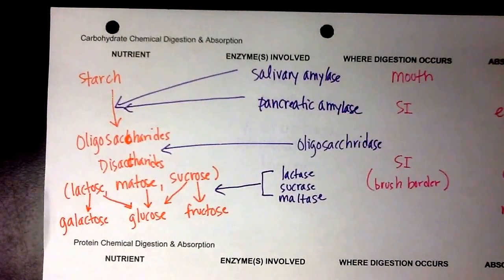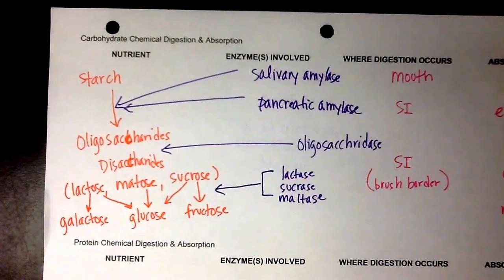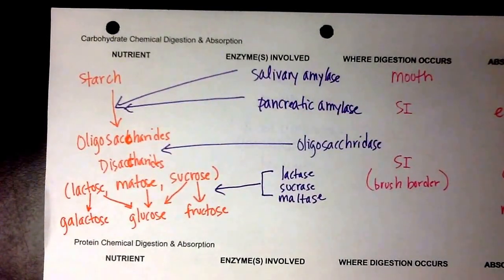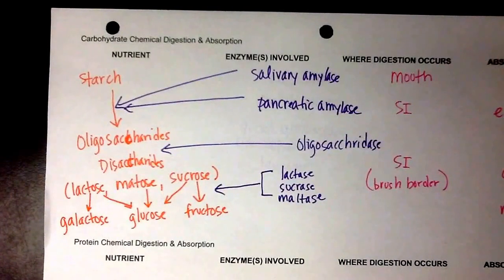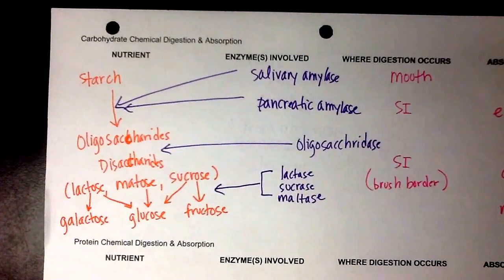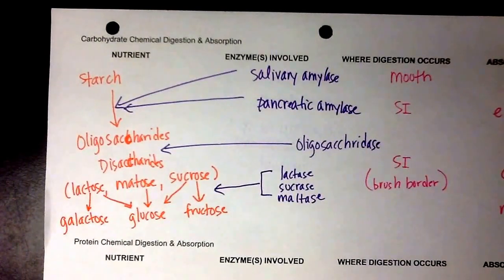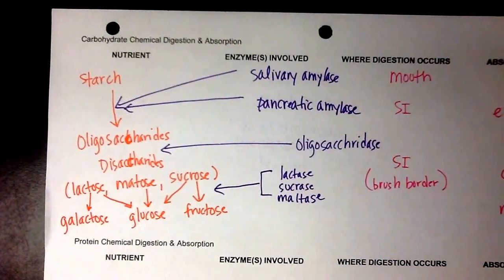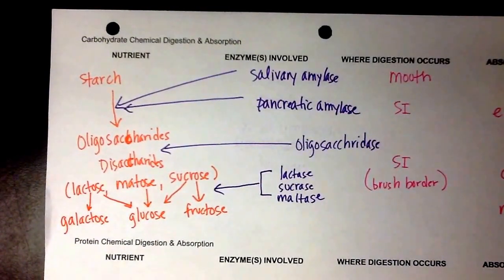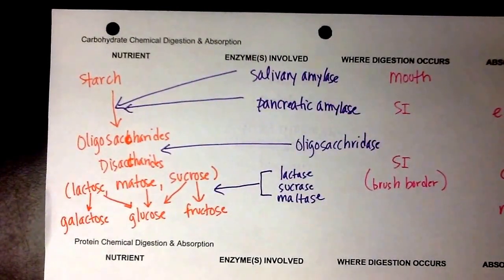So underneath the nutrients, you're going to put the nutrients that are broken down. So you'll see starch into oligosaccharides, oligosaccharides into disaccharides. The three disaccharides are lactose, maltose, and sucrose. And then those disaccharides are broken down into monosaccharides, galactose, glucose, and fructose. And what I was trying to show you on there was that lactose is a disaccharide made up of two monosaccharides, galactose and glucose. Maltose is made up of two glucose molecules. Sucrose is made up of a glucose and a fructose. For the exam, you don't need to worry about that. I just wanted to show you that that's what it is.